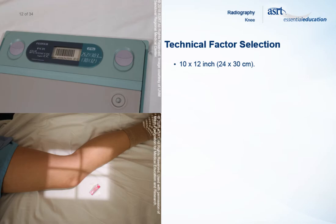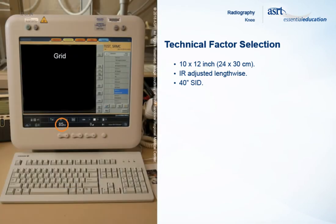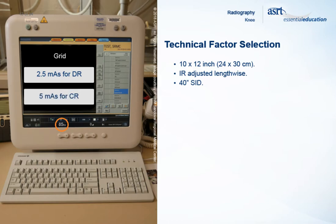A 10 by 12 inch or 24 by 30 cm image receptor is used for a lateral projection of the knee and is adjusted lengthwise. The SID is set at a minimum of 40 inches, although some departments may require a longer SID. Collimation is adjusted to 10 inches by 12 inches. 85 kVp is a common setting for a lateral projection performed with a grid. Automatic exposure control may be used to achieve proper mAs setting; however, common mAs settings are 2.5 mAs when using digital radiography and 5 mAs when using computed radiography. When a grid is not used, kVp is commonly set to 70 and the mAs settings remain the same. A small focal spot is selected.